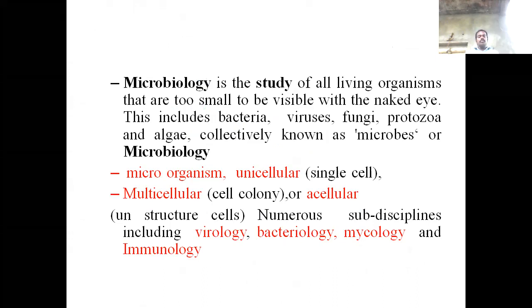Microorganisms are unicellular, multicellular, or acellular. Unicellular example: single-cell bacteria and fungi. Multicellular example: all animals and plant cells. Acellular organisms have an unstructured form of cells. Microbiology has numerous sub-disciplines including Virology, Bacteriology, Mycology, and Immunology.